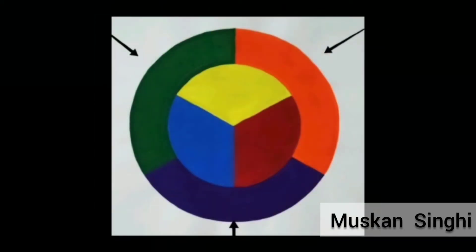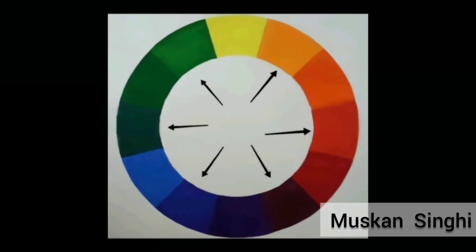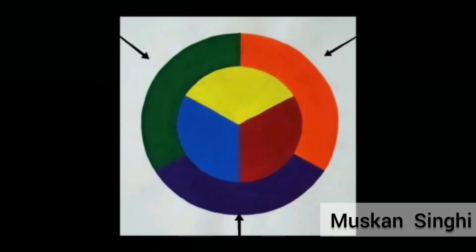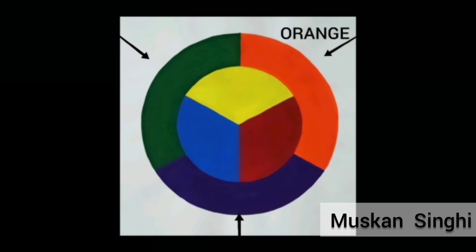There are three primary colors, three secondary colors, and six tertiary colors. The three primary colors are red, yellow, and blue, and the three secondary colors are orange, green, and violet.